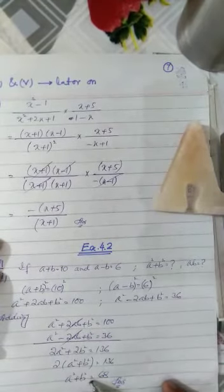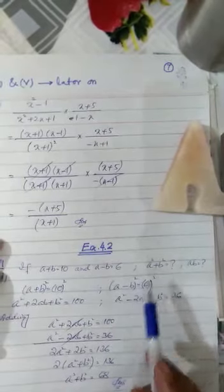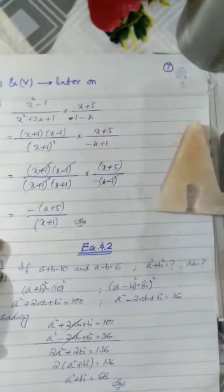2 common, dividing both sides by 2, so you will get the required value of a² + b² in the form of 68.